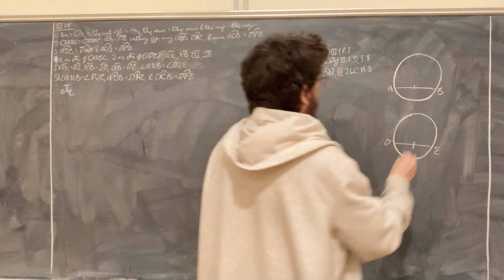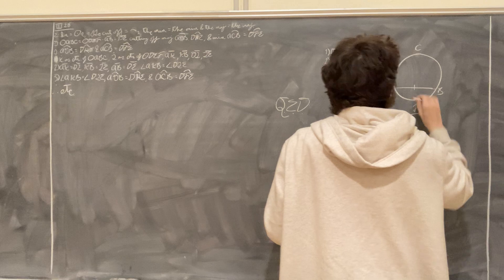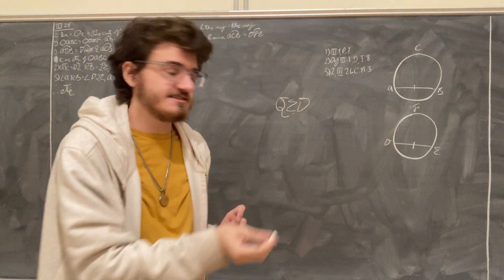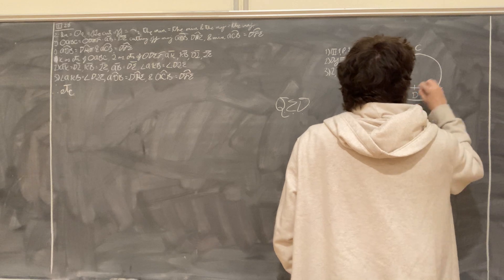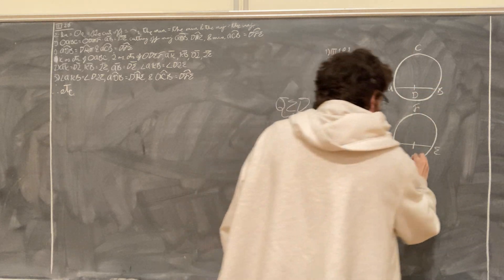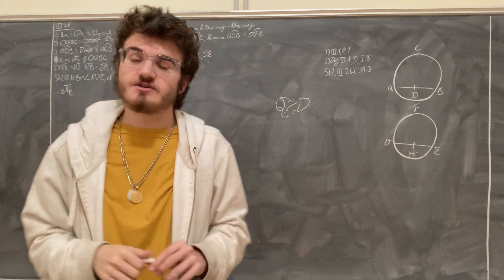Such that they cut off the major arcs ACB and DEF, like so. That's the major arc, it's greater than a semicircle, and subsequently the minor arc AGB and DHF. So these are the minor arcs that are less than a semicircle.